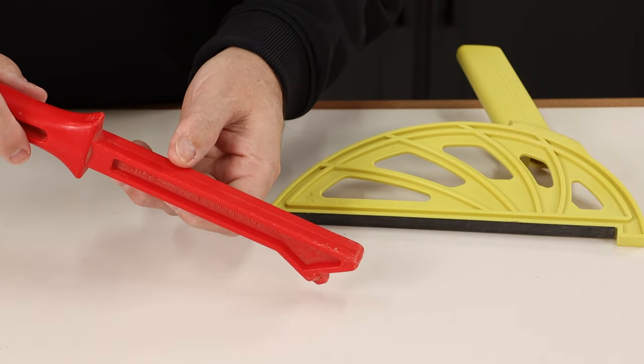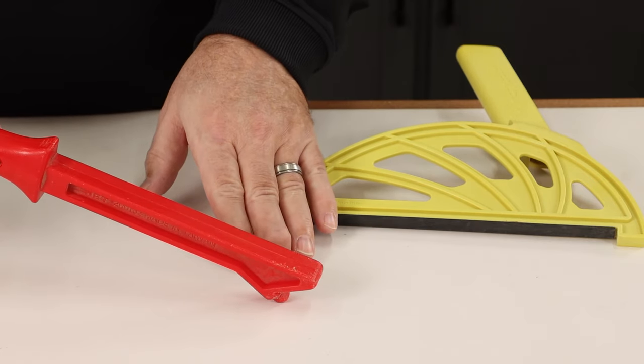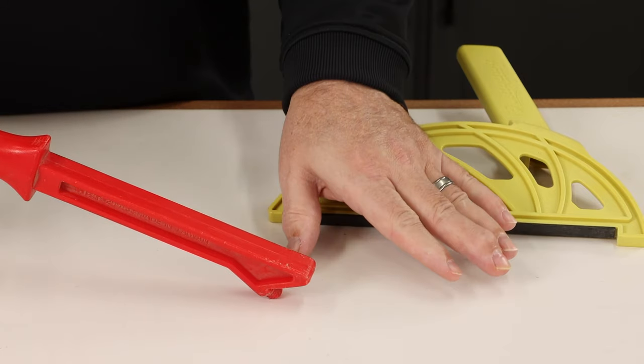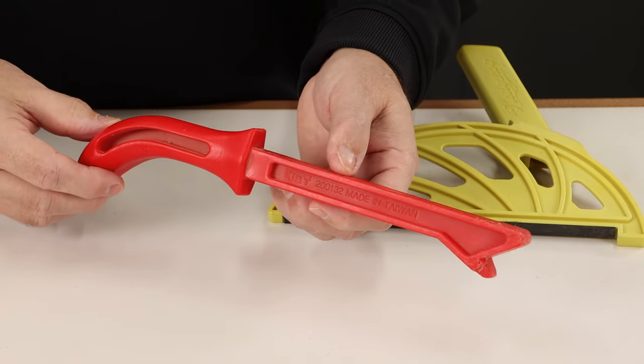Imagine using this at the table saw for instance. You're only holding down that back edge of the workpiece and that really invites it to lift up into the blade, and that's a situation that can cause kickback.